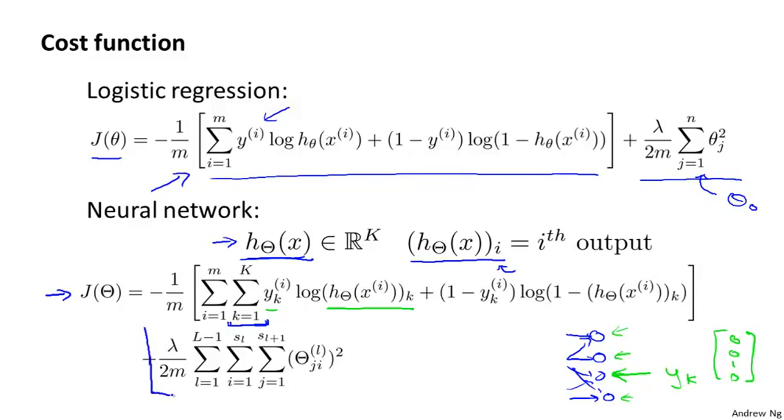And finally, the second term here is the regularization term, similar to what we had for logistic regression. This summation terms looks really complicated, but all it's doing is summing over these terms theta_j,i,l for all values of i, j, and l, except that we don't sum over the terms corresponding to these bias values, like we had for logistic regression.